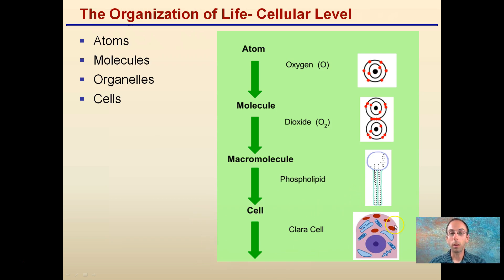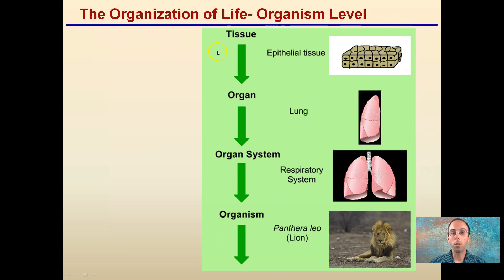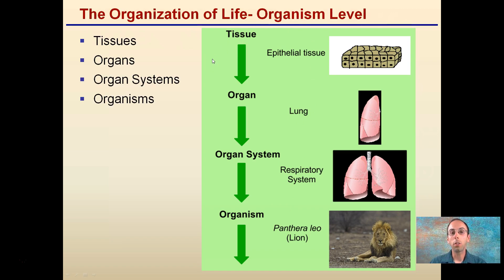So here we have the cell, which is composed of atoms that form together to make molecules, which make macromolecules or big molecules. Those then come together to make cells. From cells, we continue on to tissues. A combined organization of cells forms tissues, and those tissues can then combine to form an organ.